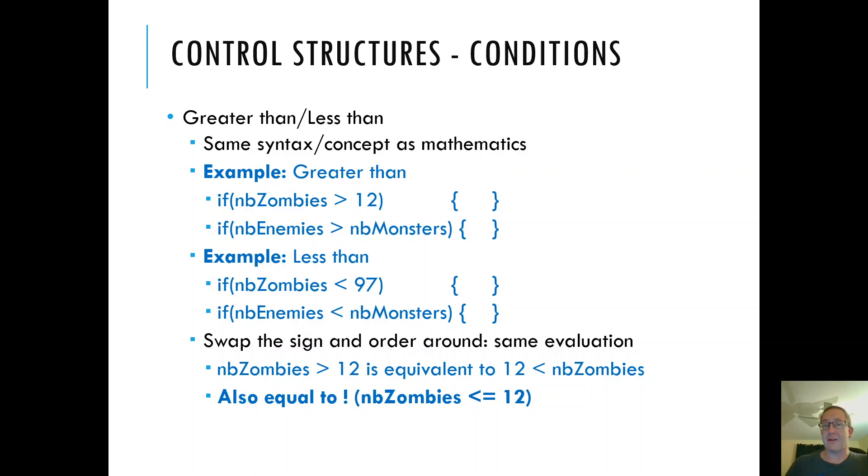So I also have the greater than syntax. So number of zombies is greater than 12. I have the less than syntax. Number of zombies is less than 97. And notice because it works the way that normal mathematics work. So number of zombies is greater than 12 is the exact same thing as 12 is less than the number of zombies. You can put it in either order. You just gotta flip the sign and flip the order, but it works.